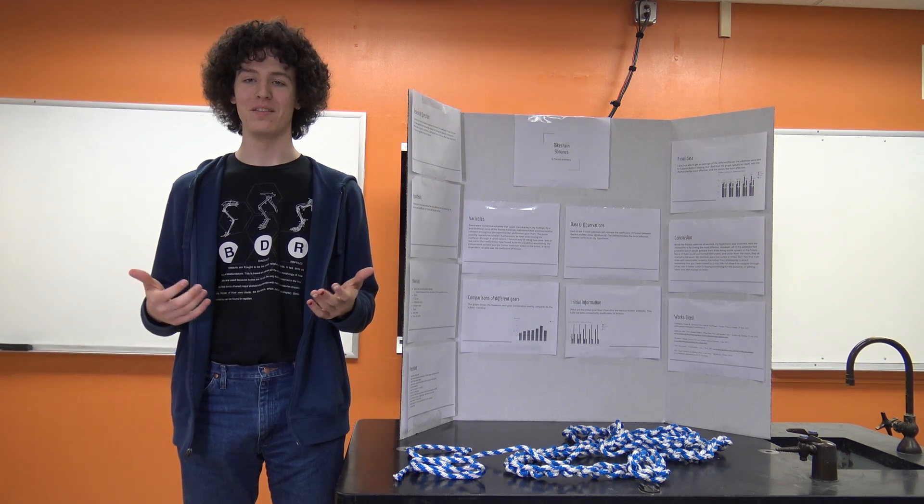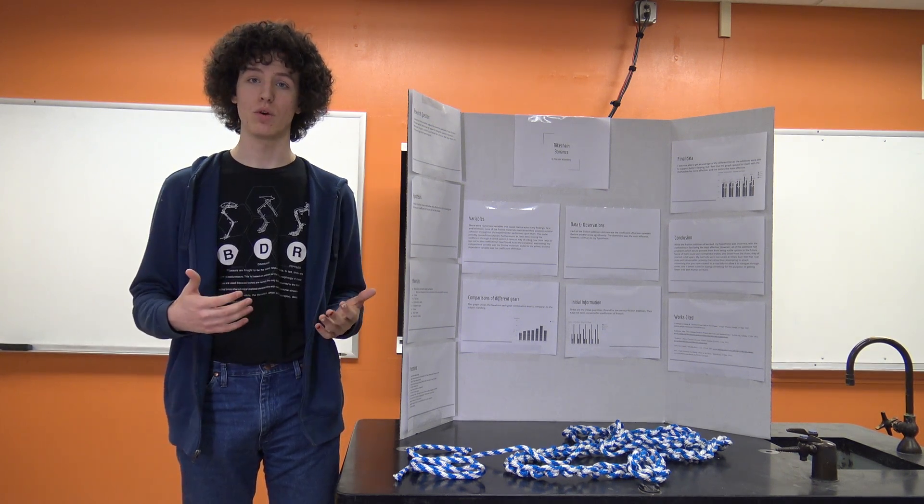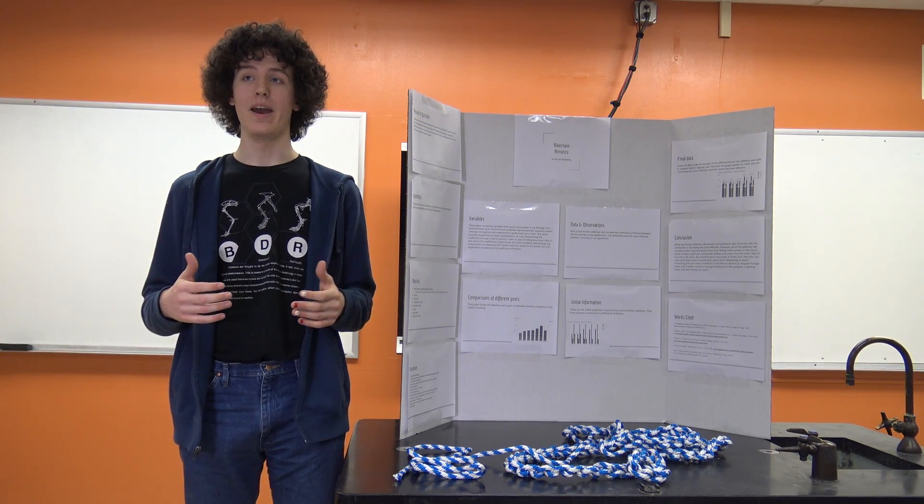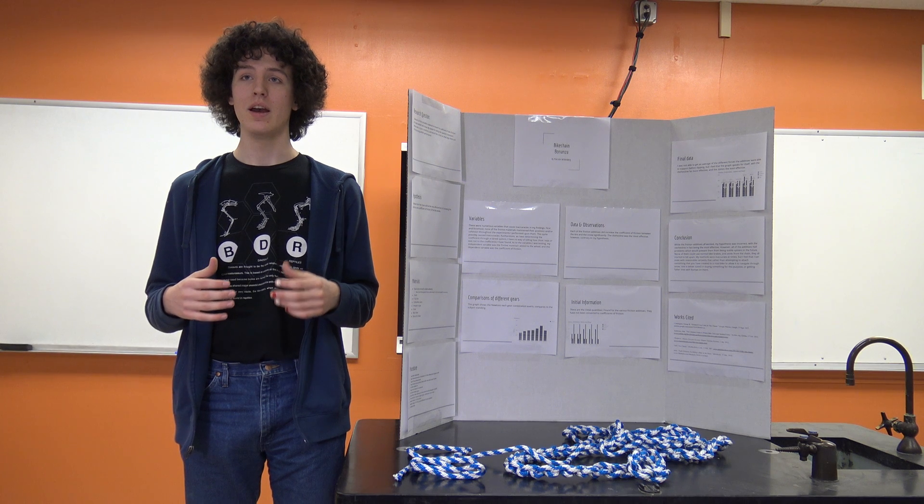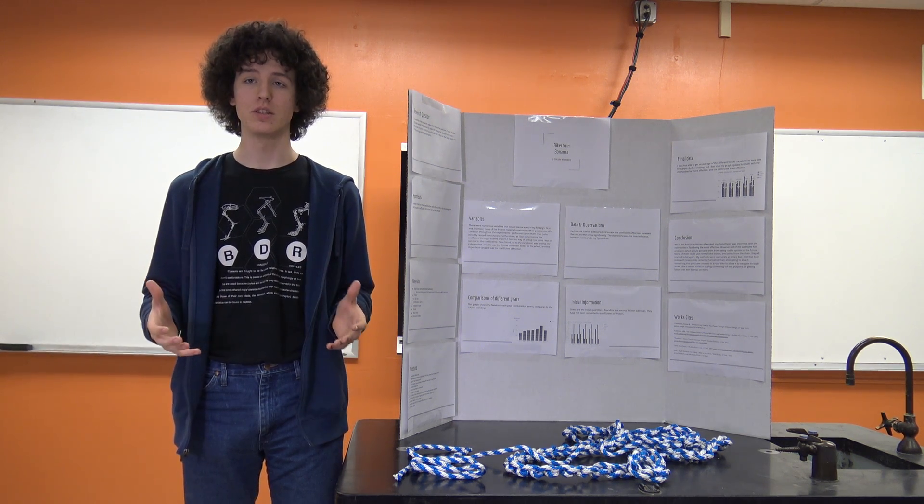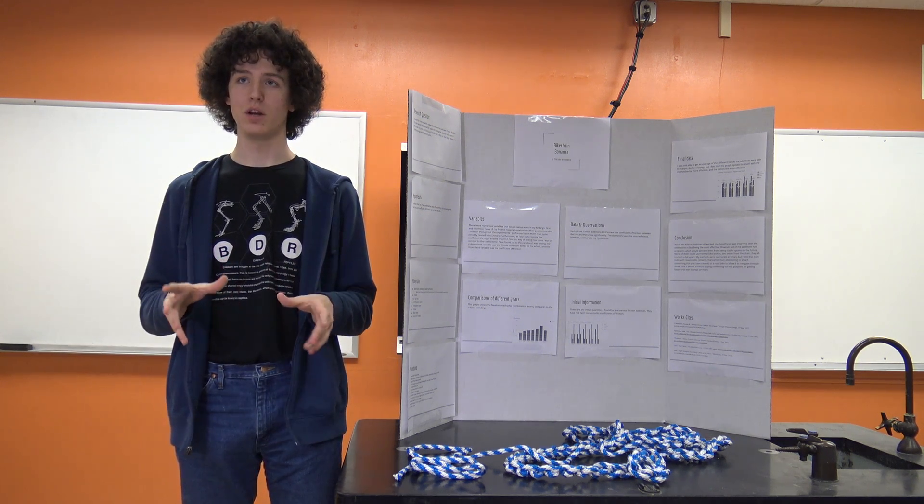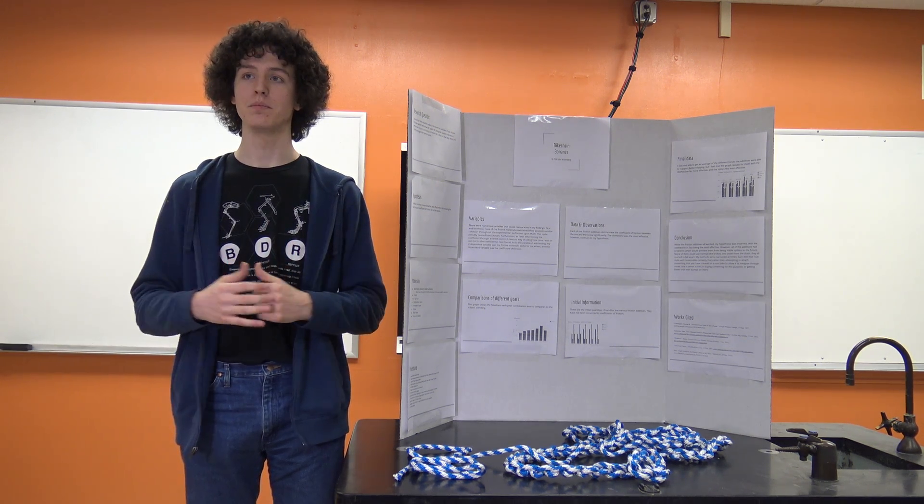As my conclusion, I found that while all the friction additives worked, my hypothesis was wrong. The clothesline works best. As a whole, it's better to either get bike chains that are purpose-built, get a mountain bike, or get better tires with bumps on them. Thank you.